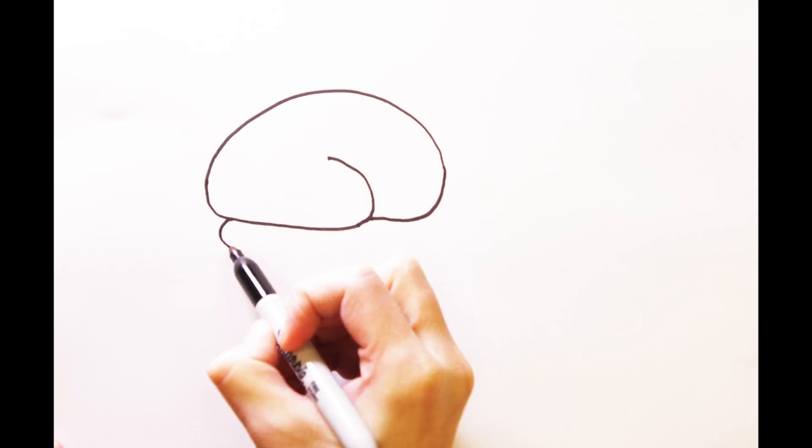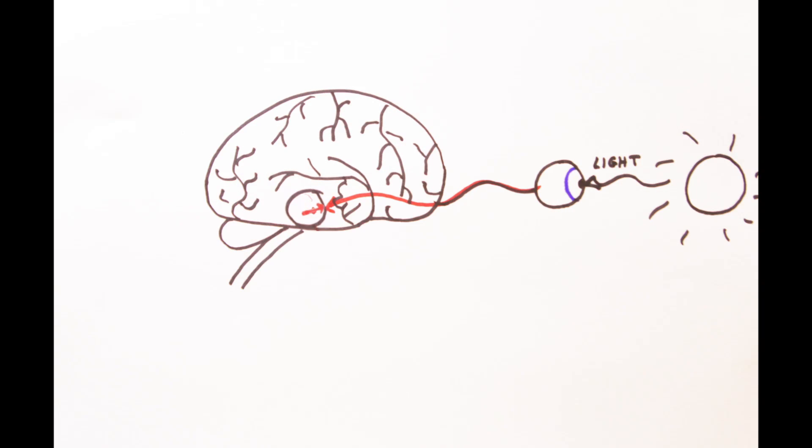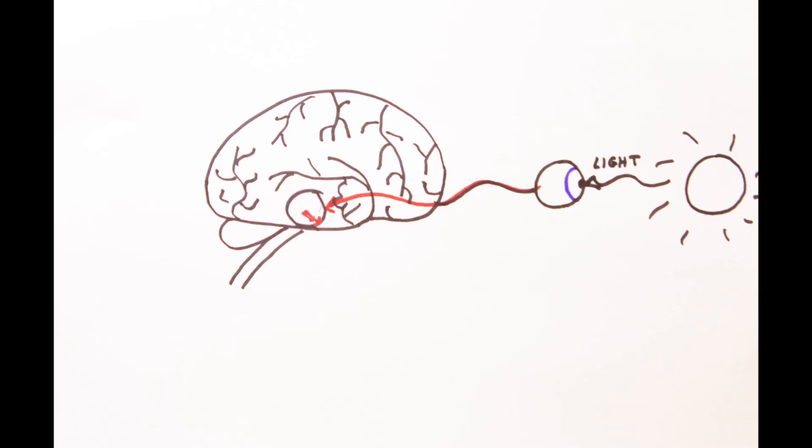The brain receives light information through the eyes that tells it the time of day. This information is received by the suprachiasmatic nucleus, or SCN for short, in a region of the brain called the hypothalamus.